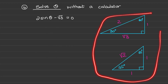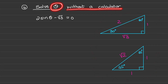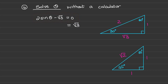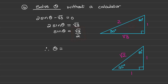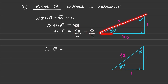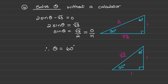We can also use the special triangles to solve for theta without a calculator. For example, given two sine theta minus the square root of three equals zero, we isolate sine theta by moving the square root of three to the right-hand side and dividing both sides by two. This gives sine of theta equals square root of three over two. Recognising this as opposite over hypotenuse from the 30-60 degree triangle, where the hypotenuse is two and the side opposite 60 degrees is square root of three, therefore theta equals 60 degrees.